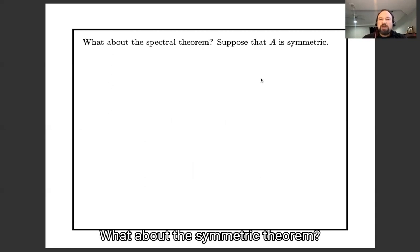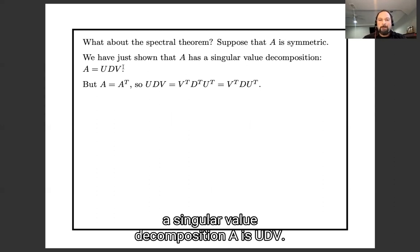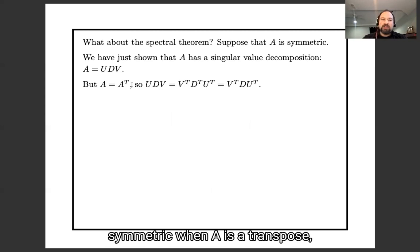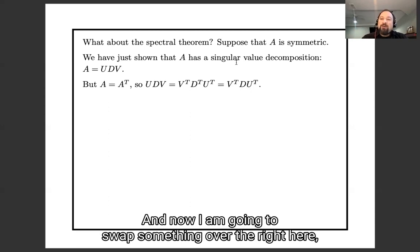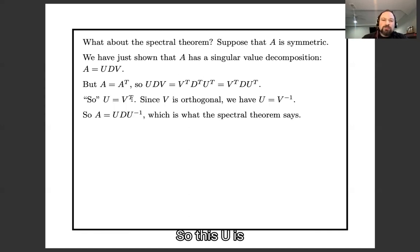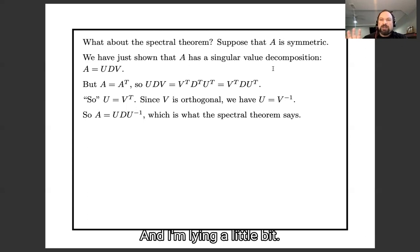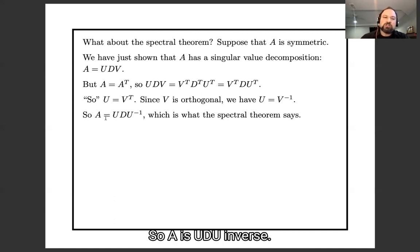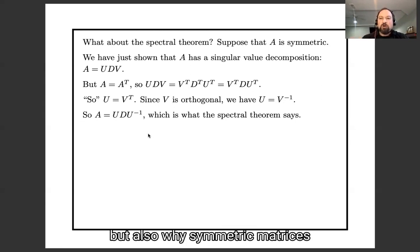The one more question I want to answer is: what about the spectral theorem? What happens if A is symmetric? What I've just shown is that A has a singular value decomposition: A = UDVᵀ. But if A is symmetric, then A = Aᵀ, so UDV = VᵀDᵀUᵀ. A diagonal matrix is its own transpose, so this is VᵀDUᵀ. Now, sweeping something slightly under the rug: U = Vᵀ, and since V is an orthogonal matrix, that means U = V⁻¹. So A = UDU⁻¹, and that's exactly what the spectral theorem says. I've now explained not only why singular value decompositions exist, but also why symmetric matrices have real orthonormal eigenbases.